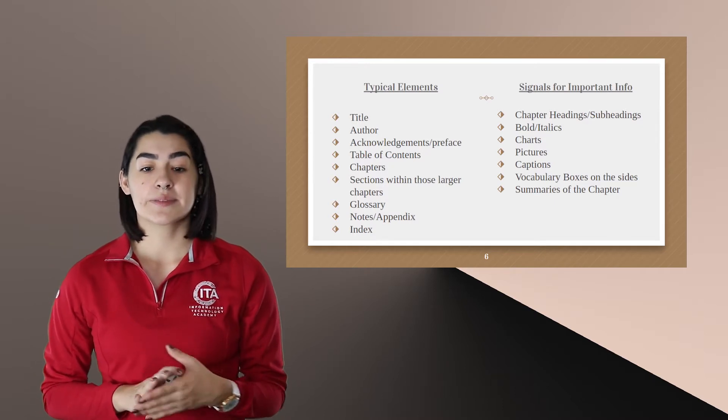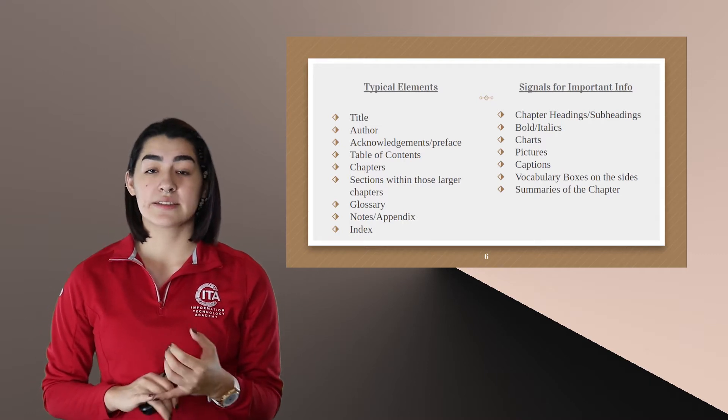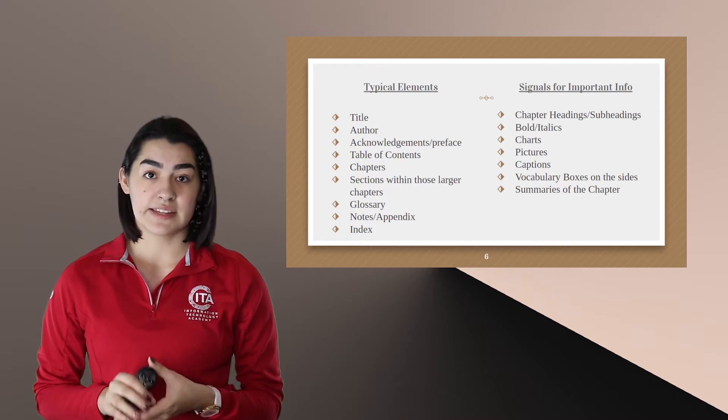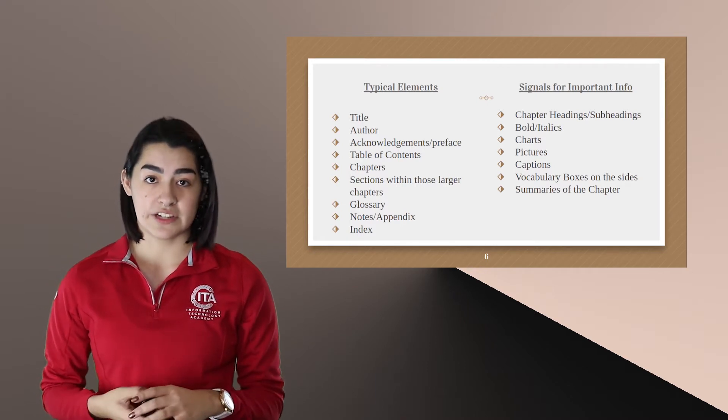And as you're reading your textbook, some signals for important information include chapter headings, bold or italics, charts, pictures, vocabulary boxes on the side of the pages, and most importantly, summaries of the chapter.